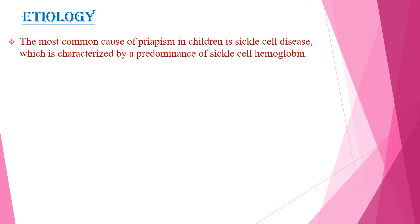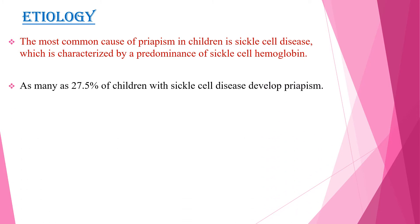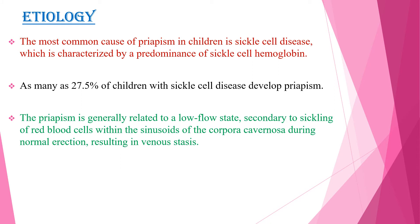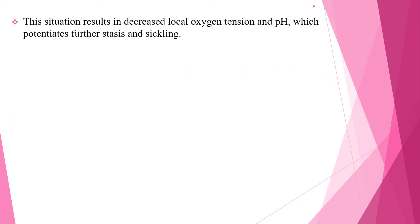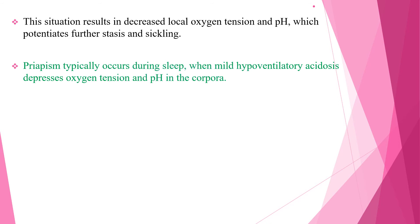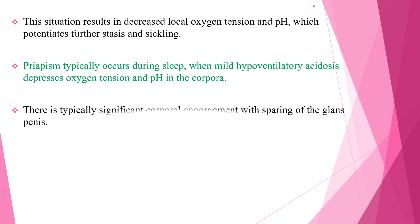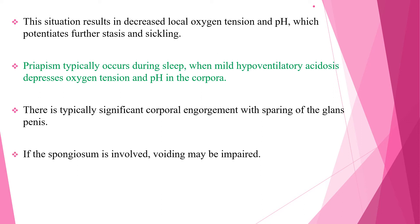Regarding the etiology of Priapism, the most common cause in children is sickle cell disease, characterized by predominance of sickle cell hemoglobin. As many as 27.5% of children with sickle cell disease develop Priapism at some time. It progresses to a low-flow state secondary to sickling of red blood cells within the sinusoids of the corpora cavernosa during normal erection, resulting in venous stasis, decreased local oxygen tension, and decreased pH, which potentiates further stasis and sickling. Priapism typically occurs during sleep, when mild hypoventilatory acidosis decreases oxygen tension and pH in the corpora. There is typically significant corporal enlargement with sparing of the glans, and if the spongiosum is involved, voiding may also be impaired.